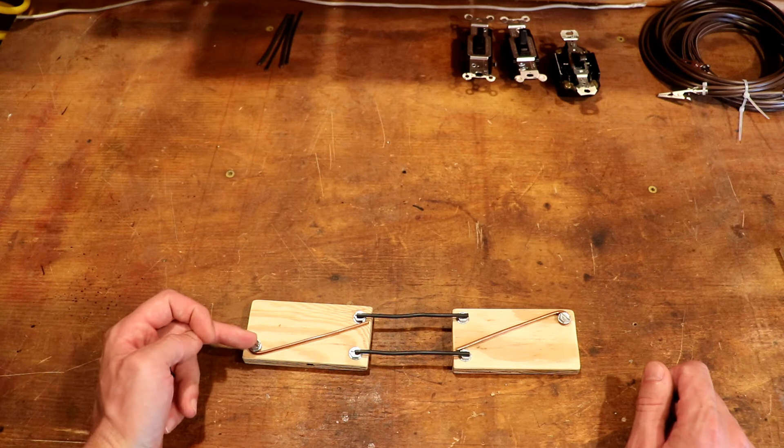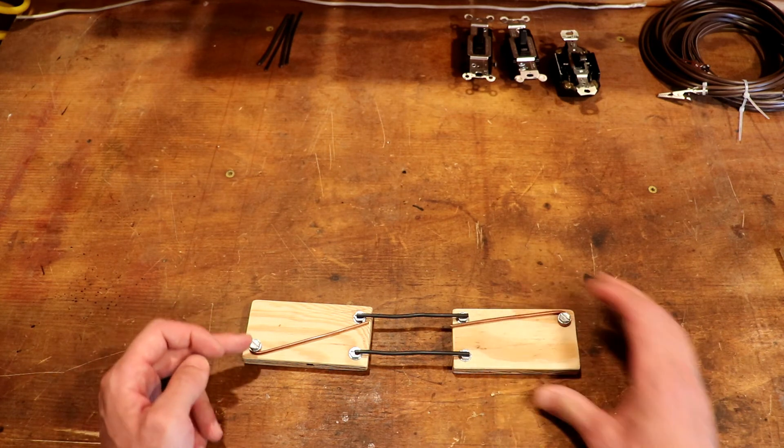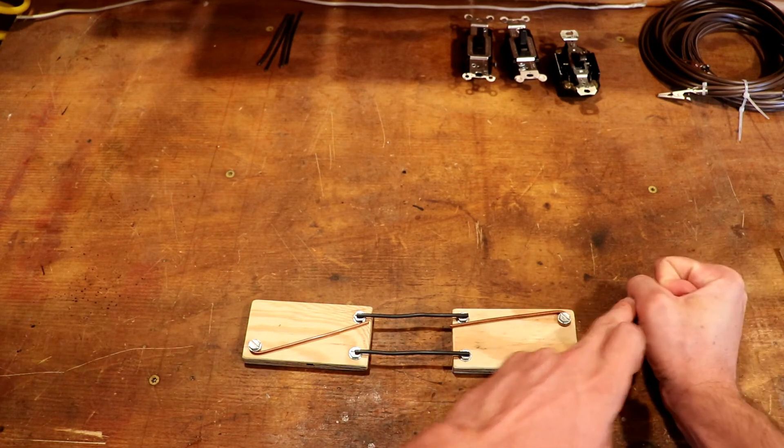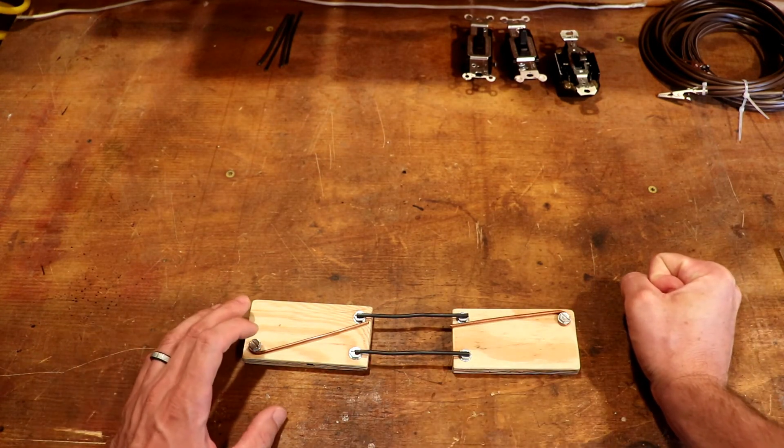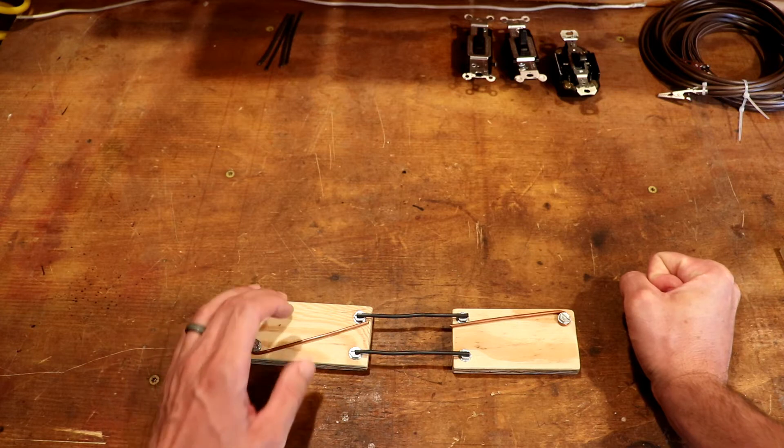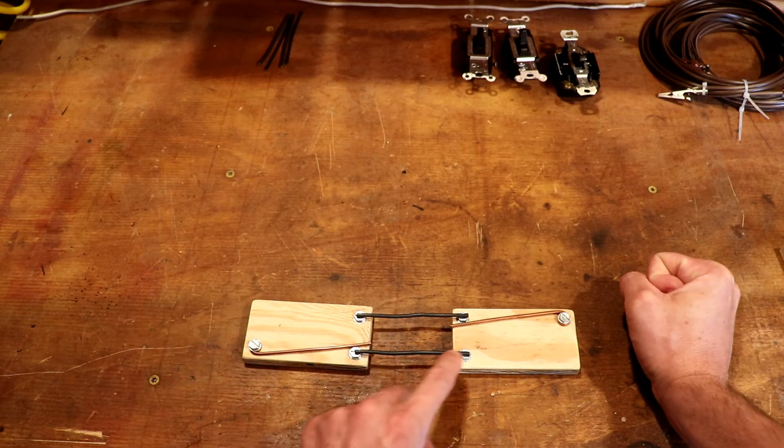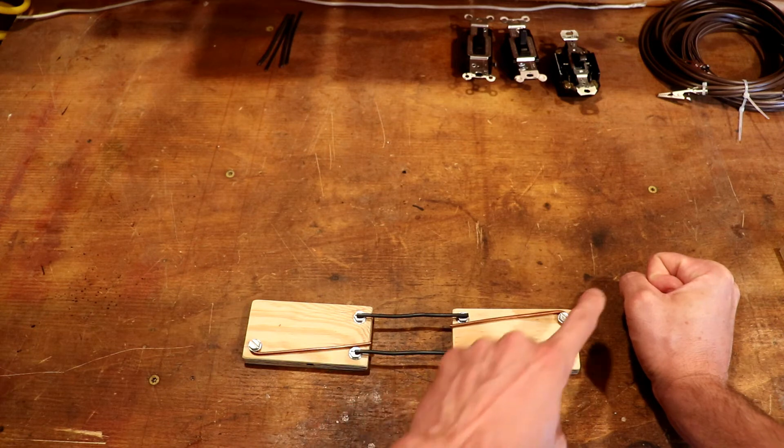Power comes in here, flows through here, over here, and goes out this lug to our light. To turn the light off, we can flip either one of these switches. And now you can see power flows through and stops right here and is not able to continue through.